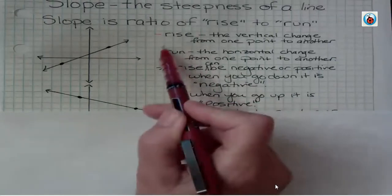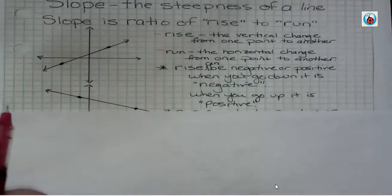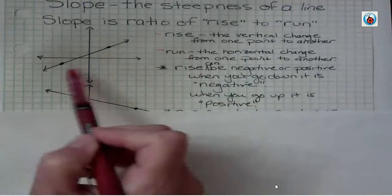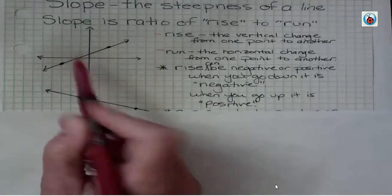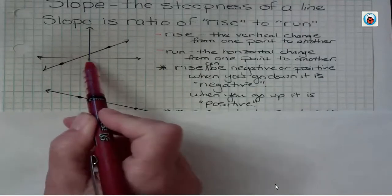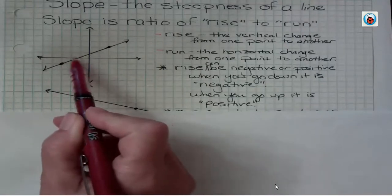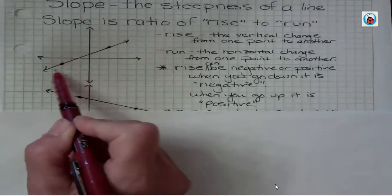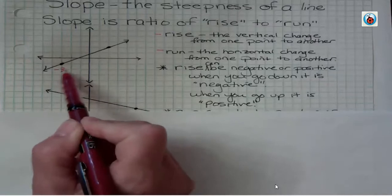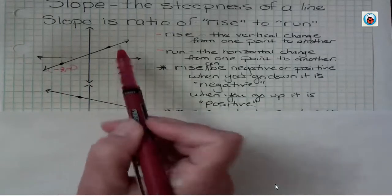Let's take a look at these points. This point right here is negative one, three — wait, negative one — and this point over here is two, two.